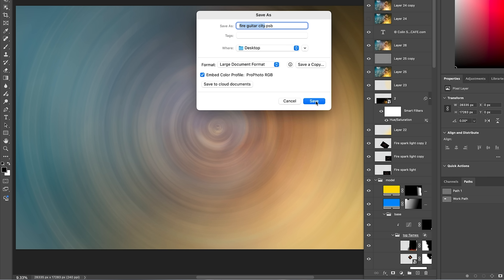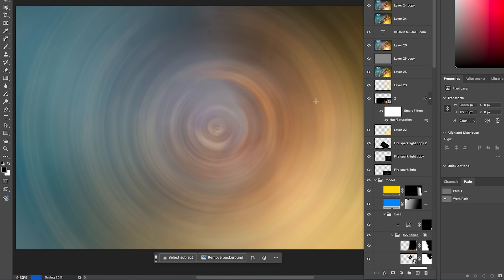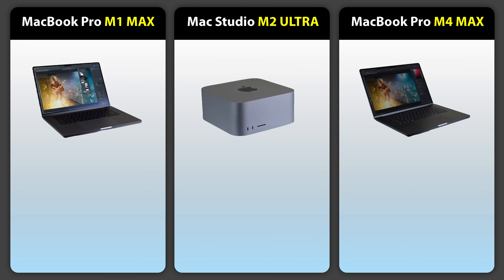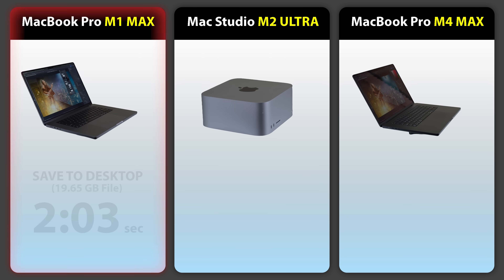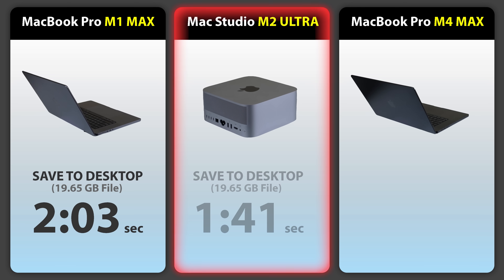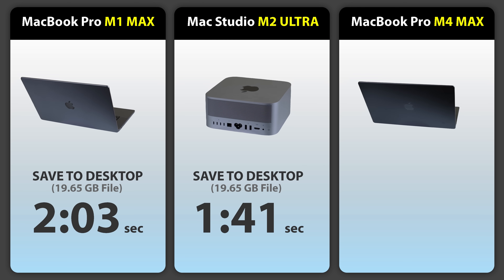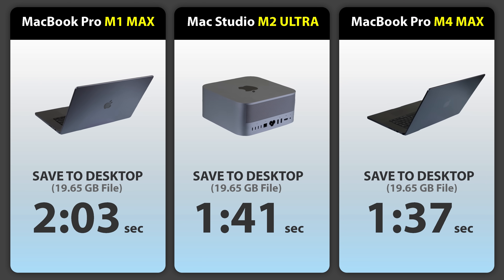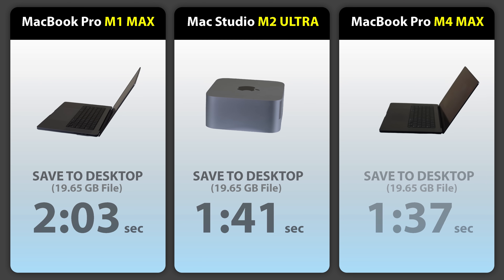Now we're going to test drive write speed. If you've ever saved a Photoshop document, you know it takes longer than opening it. In this case it's going to end up being a 20 gigabyte file and we're saving it to the desktop. The M1 MacBook Pro: 2 minutes and 3 seconds. The M2 Studio: 1 minute and 41 seconds. And the M4 MacBook Pro: 1 minute and 37 seconds. Wins again.